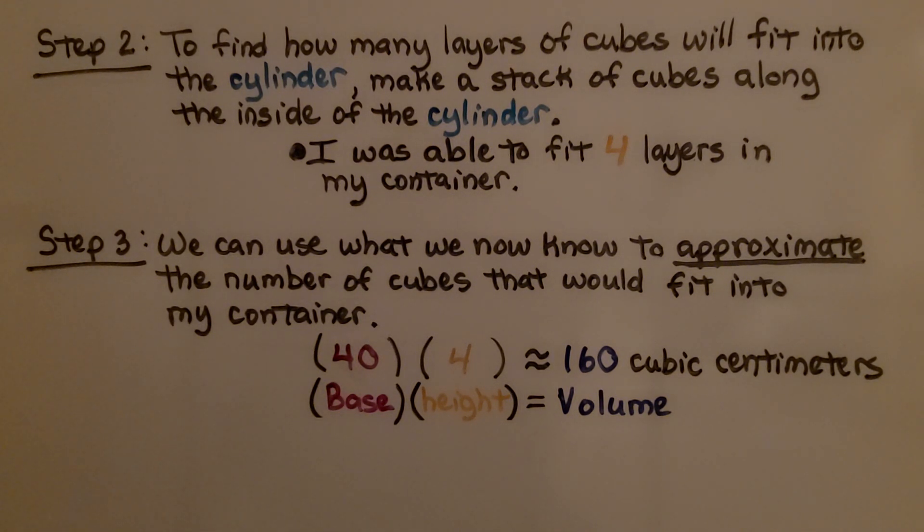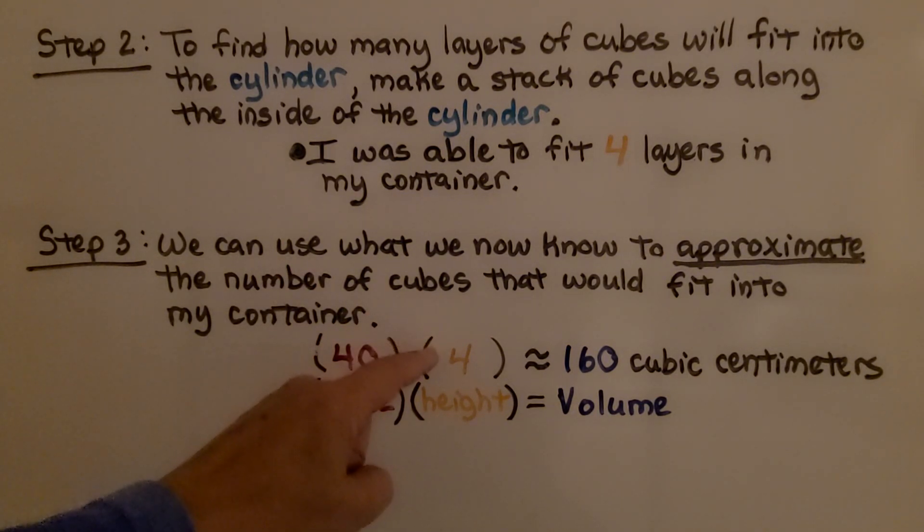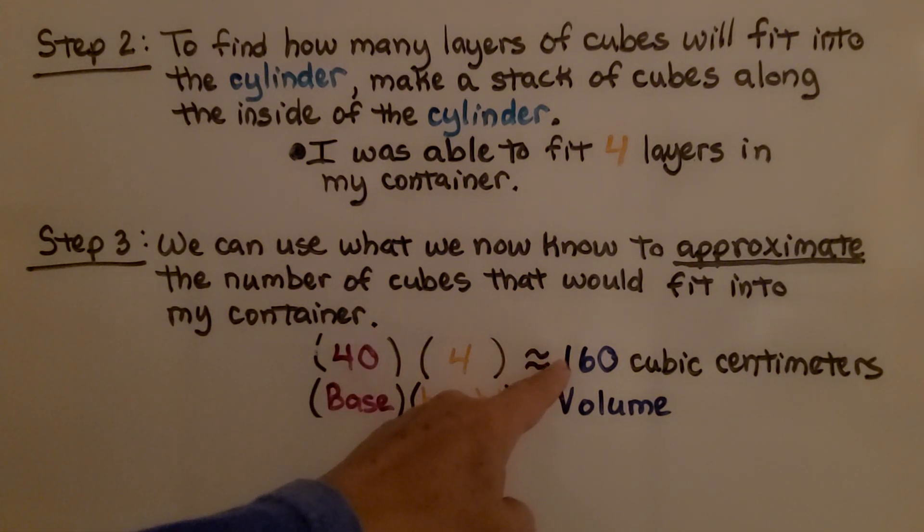Step three: we can use what we now know to approximate the number of cubes that would fit into my container. I had 40 cubes in the first layer and they were stacked four high. 40 times 4 is 160.